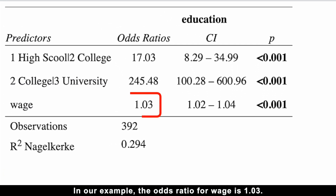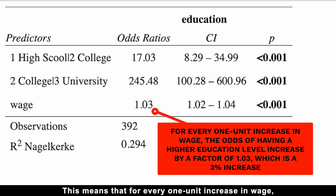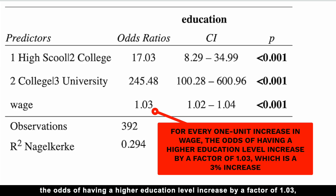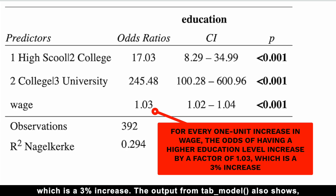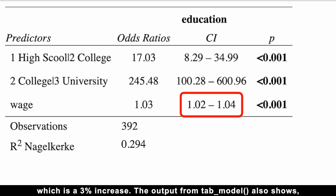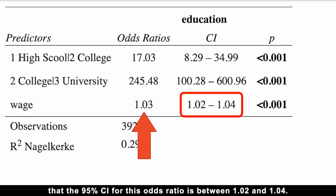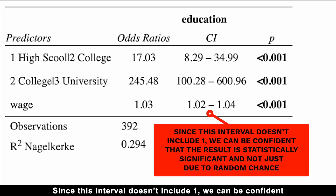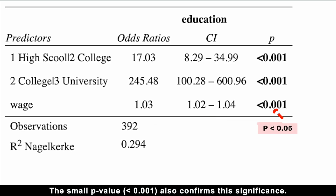In our example, the odds ratio for wage is 1.03. This means that for every one-unit increase in wage, the odds of having a higher education level increase by a factor of 1.03 — a 3% increase. The tabModel output also shows that the 95% confidence interval for this odds ratio is between 1.02 and 1.04. Since this interval doesn't include 1, we can be confident the result is statistically significant and not just due to random chance. The small p-value also confirms this significance.